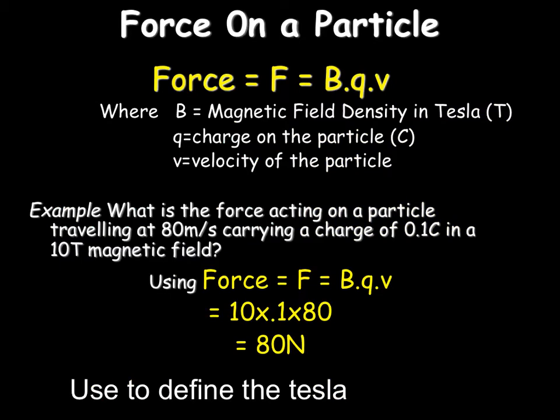We have a similar formula for the force on a particle, where Q is the charge on the particle, V is its velocity, and B is the magnetic field density measured in Tesla. Good old Nikola Tesla was from the Balkans, probably what you'd call Croatia now. Both of these formulas give us newtons because they're forces.